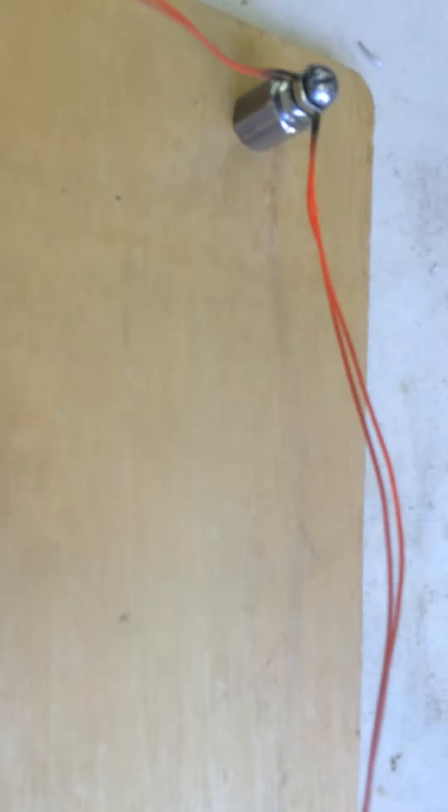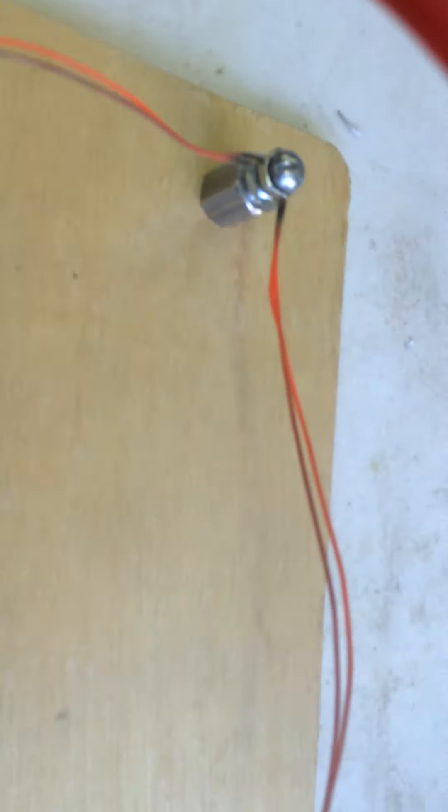It's called nichrome, nickel chromium wire, and you can see it's getting red. I'm dissipating about 400 plus watts here. Well, about 400 watts. I'd have to go look at my ohms calculator.